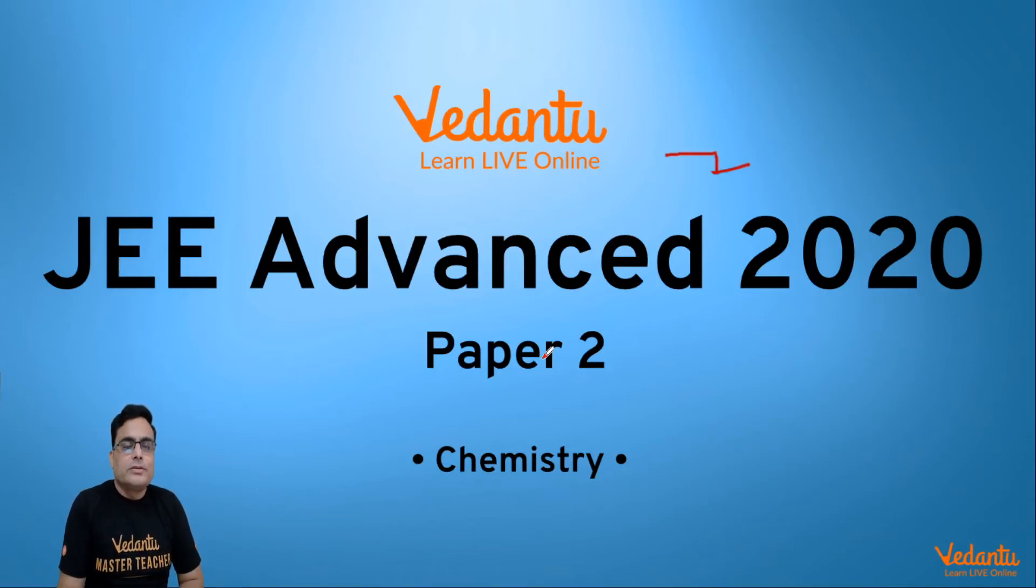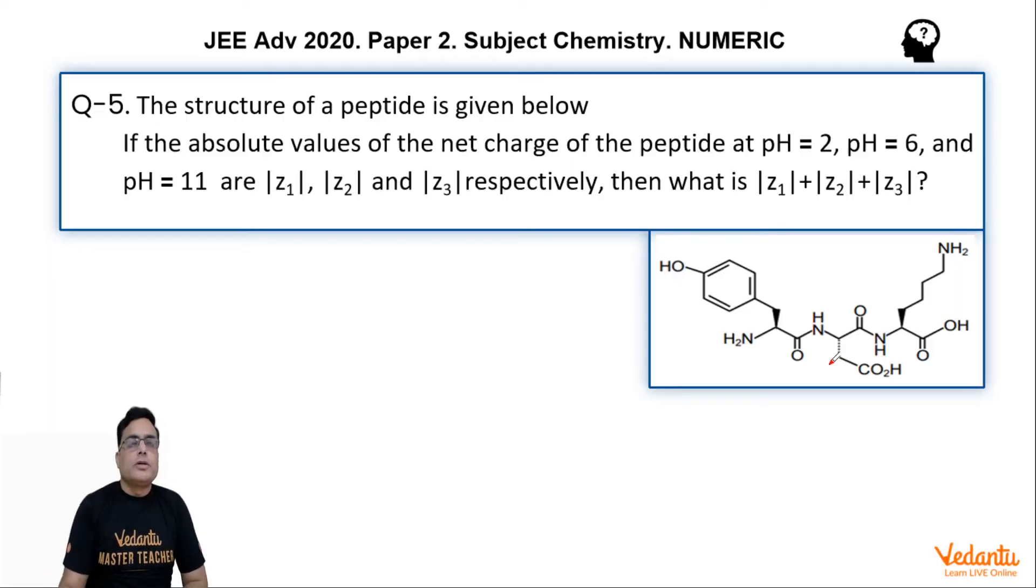Hi guys, I'm Vinay Pandey, master teacher at Vedantu, and we shall solve question number 5 of JEE Advanced 2020 Paper 2 Chemistry. Let us see the question. This question is a numeric type question.